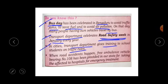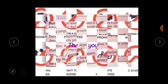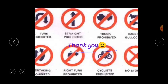When road accidents happen, a free ambulance vehicle bearing number 108 has been provided in our state for taking the affected to hospitals for emergency treatment. You might have heard this — if you call the number 108, you will get a free ambulance; they will take patients to the hospital for emergency treatment. So these are the facts about traffic rules. Children, in this lesson you have learned what traffic rules are and how to follow them, traffic signal lights and the indications of red, yellow and green, what is zebra crossing, and some of the traffic signals. Hope you understood the lesson very well.